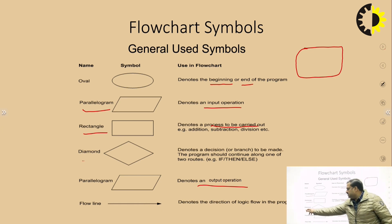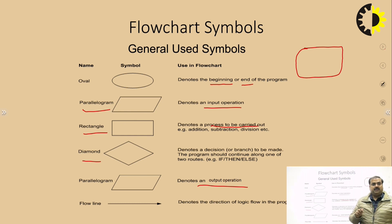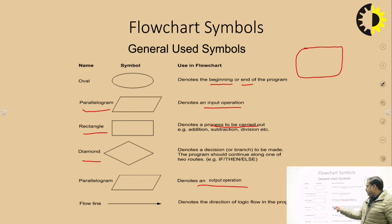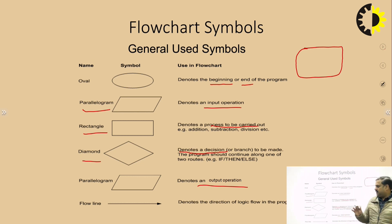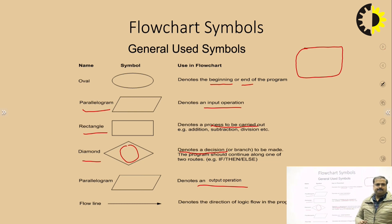Another symbol is the diamond. The diamond symbol is very important because whenever we need to take a decision — which path to follow — it denotes decision making, generally in the form of if-else. If the condition is true, we go one way; otherwise we go another way. The conditional part where a decision is taken is kept inside the diamond symbol.